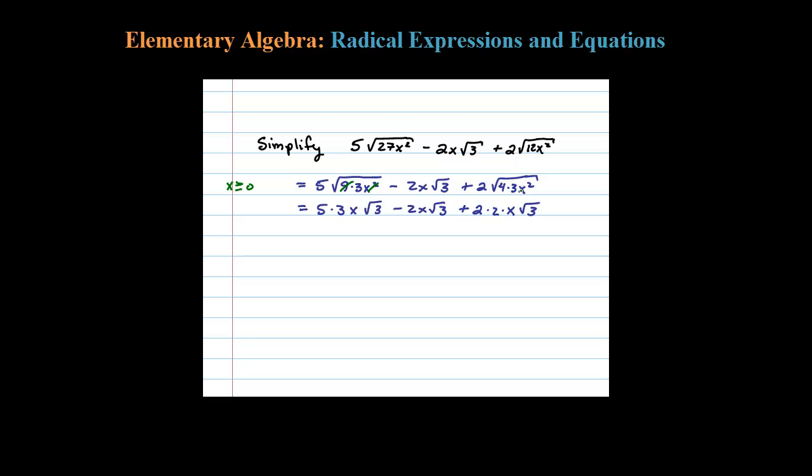Once you see that, it's just a matter of collecting up or simplifying. First, 15x square root of 3, and then collecting up like terms. Plus 4x square root of 3. Notice we have x times square root of 3 for all of these terms - they're like terms, so let's just add them together.